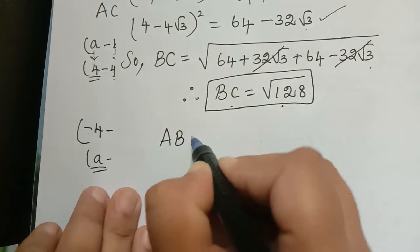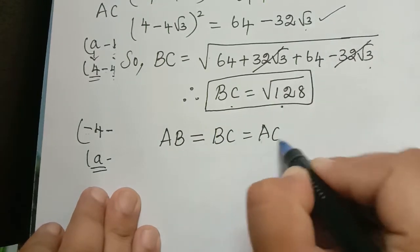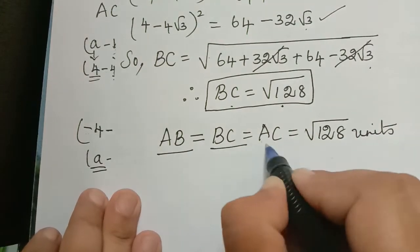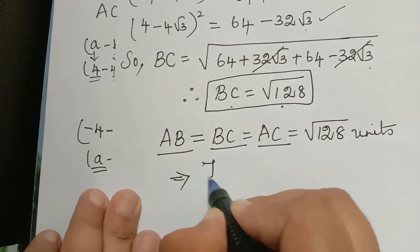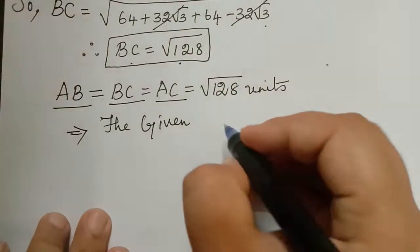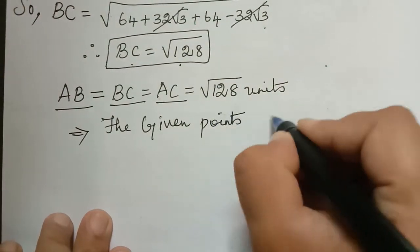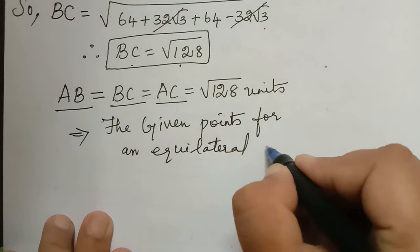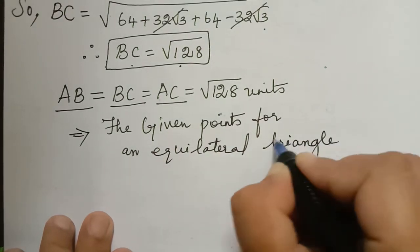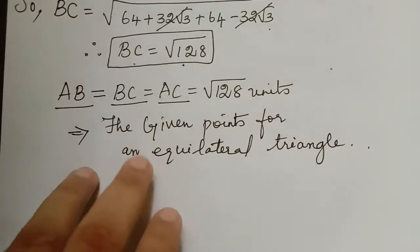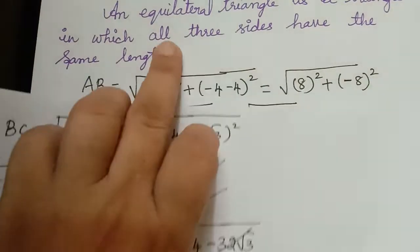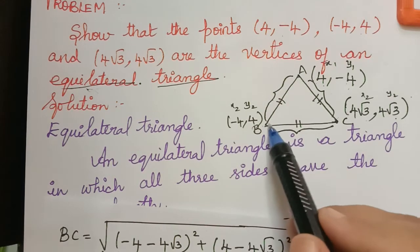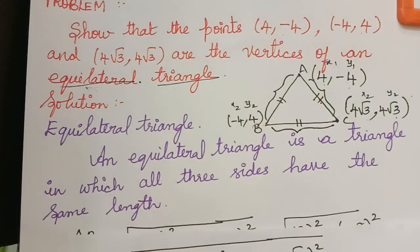We have found AB = BC = AC = √128 units. All three sides are of equal length, which implies that the given points form an equilateral triangle. This is an important problem — to prove that given three points form an equilateral triangle, we show that the lengths of all three sides are equal. Thank you.